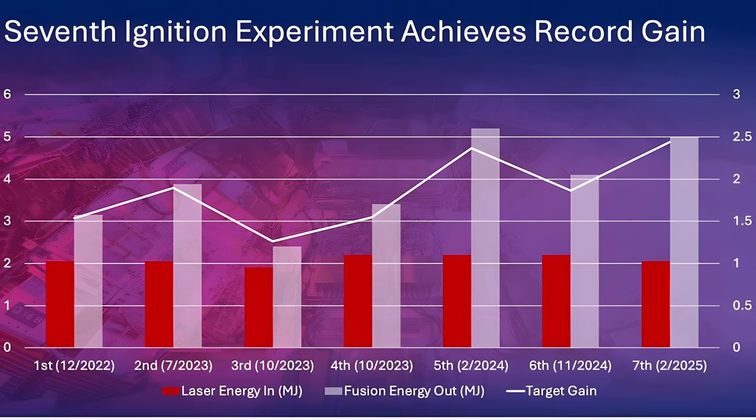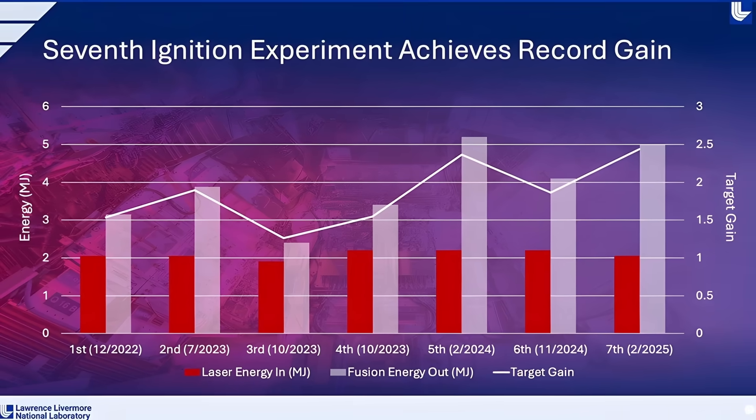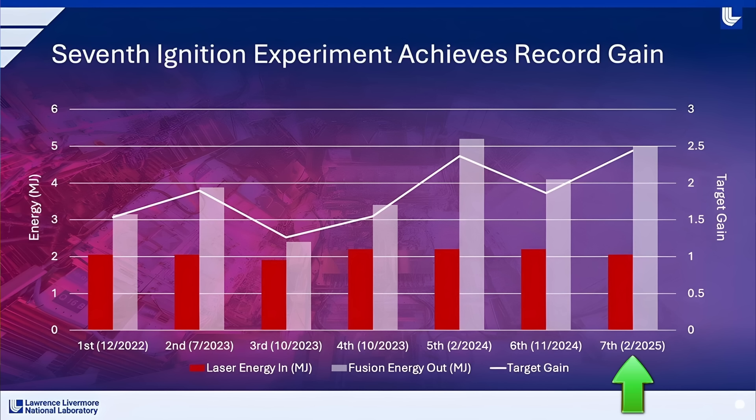On February 23rd, the National Ignition Facility quietly logged its seventh ignition shot. They squeezed five megajoules of fusion energy from just about two megajoules of laser light, a record gain of almost two and a half.